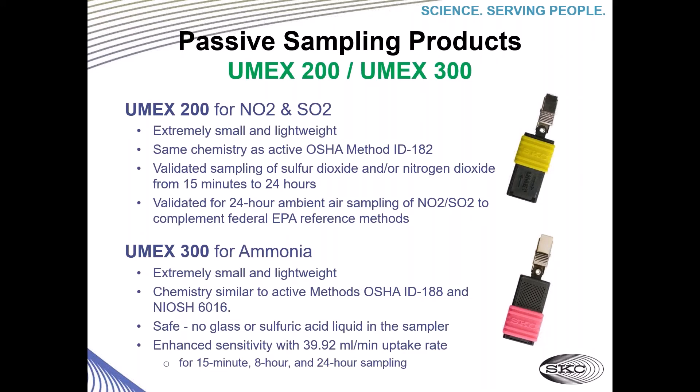In the Umex line we also have the Umex 200 for NO2 and SO2. Same design, same benefits. It uses the same chemistry as the active OSHA method ID-182, with validated sampling of sulfur dioxide and nitrogen dioxide from 15 minutes to 24 hours, and validated for 24-hour ambient air sampling for SO2 to complement federal EPA reference methods.